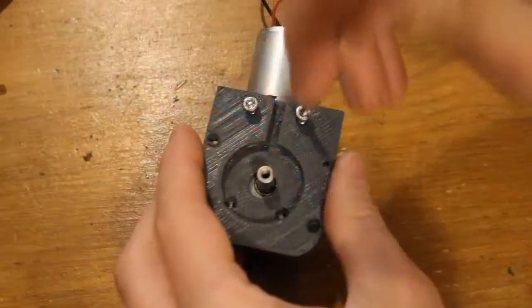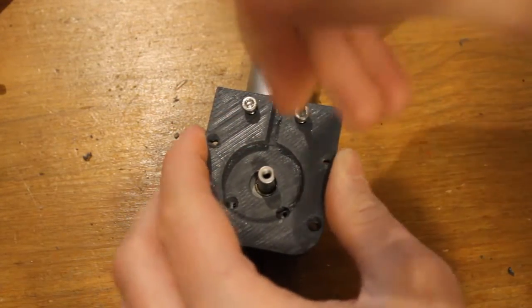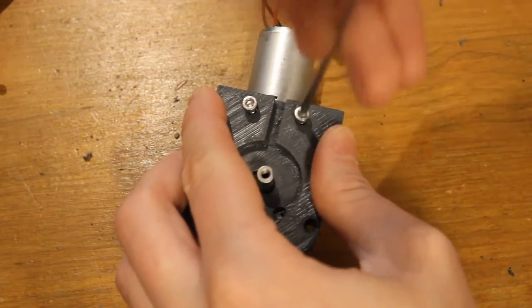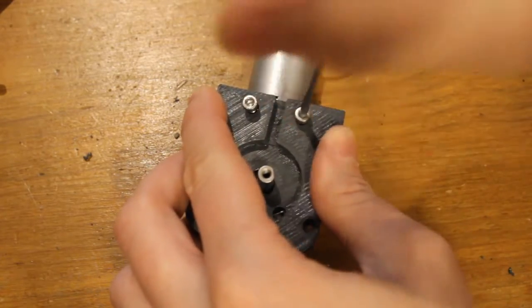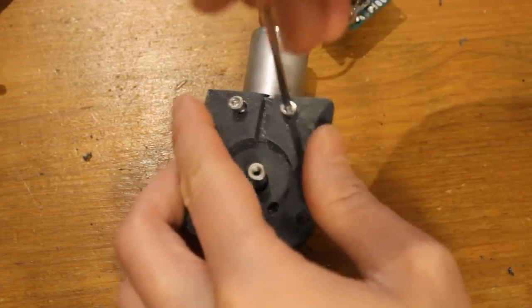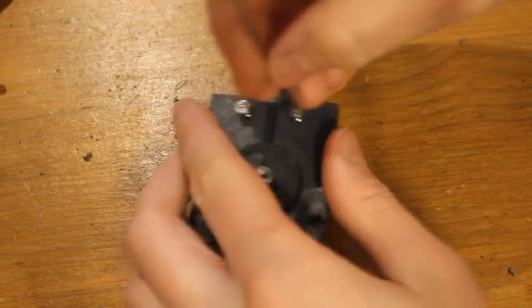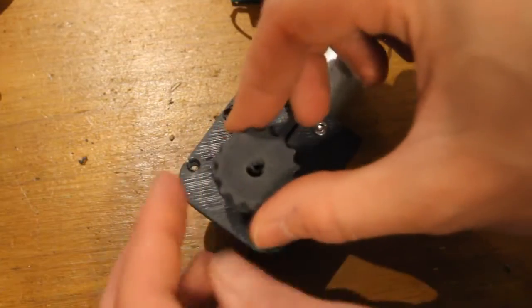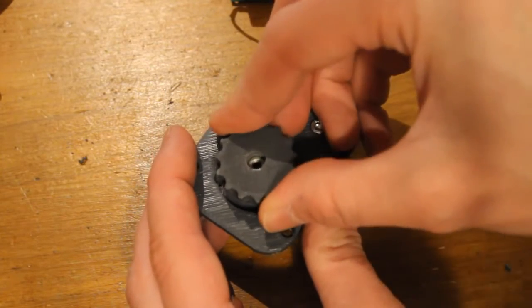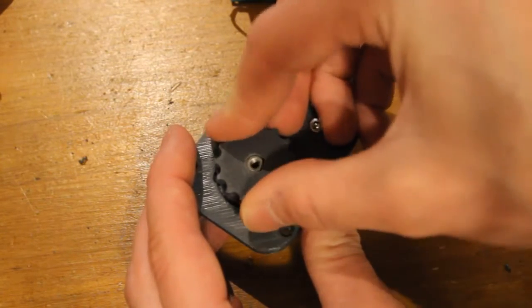Then you want to assemble the gear surround onto the motor using some M3 bolts. And then again place the gear onto the spindle. Don't worry if it doesn't line up to the countersink screw on the side.